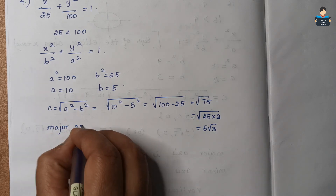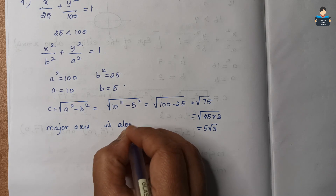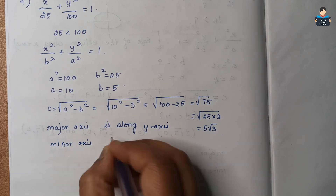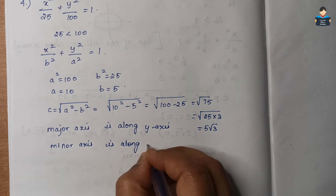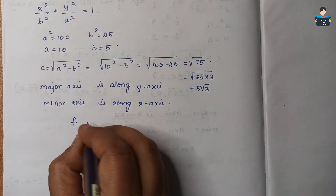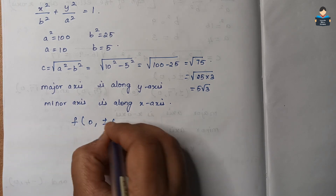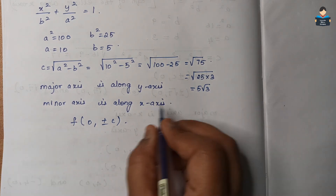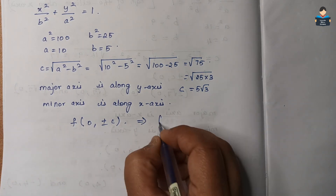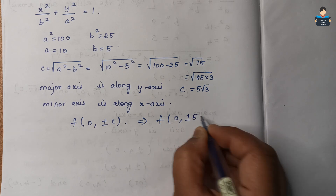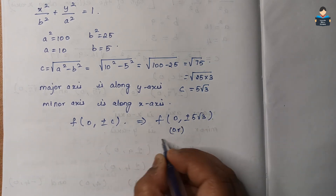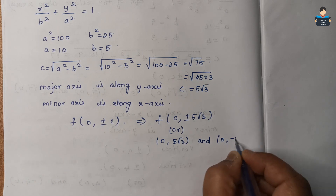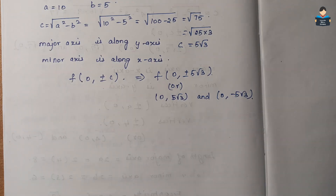The major axis is along the y-axis and the minor axis is along the x-axis. The coordinates of the foci are (0, ±c), which is (0, ±5√3).